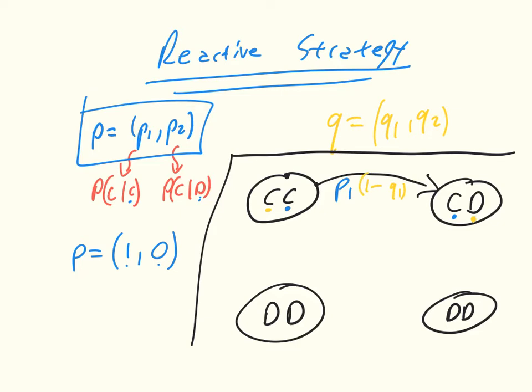And so we can go through and we can draw the entire diagram. So for example, the probability of going from CC to CC will be P1 times Q1. The probability of going from CC to DD will be 1 minus P1 times 1 minus Q1.